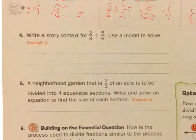Now it says write a story context for 2 thirds divided by 5 sixths. I'm not going to write a story, but I am going to solve it.